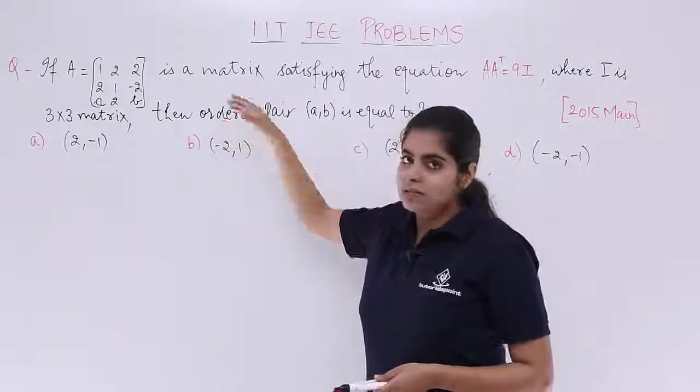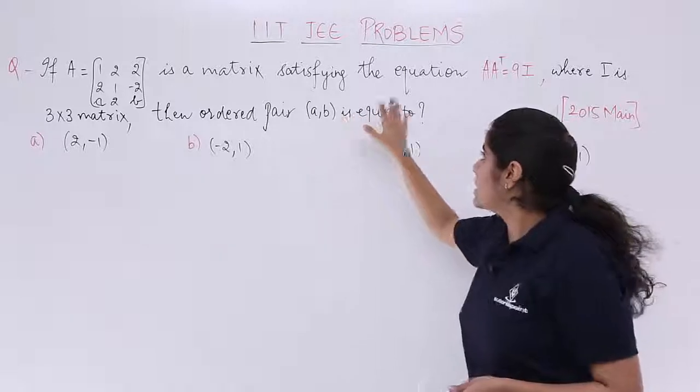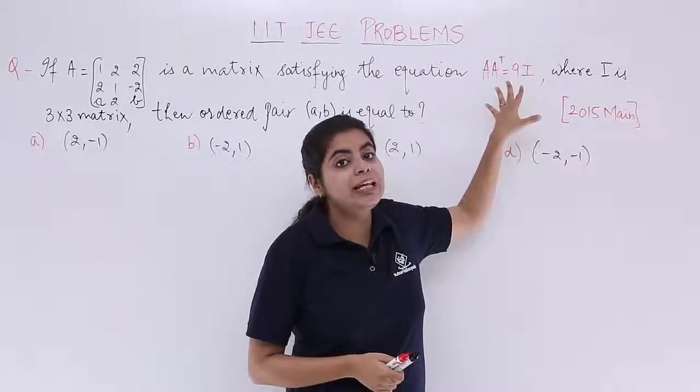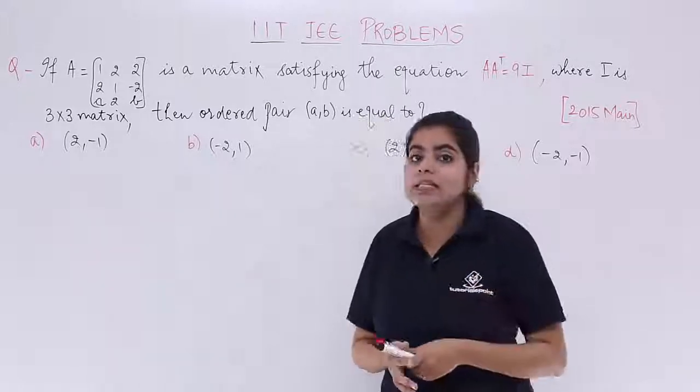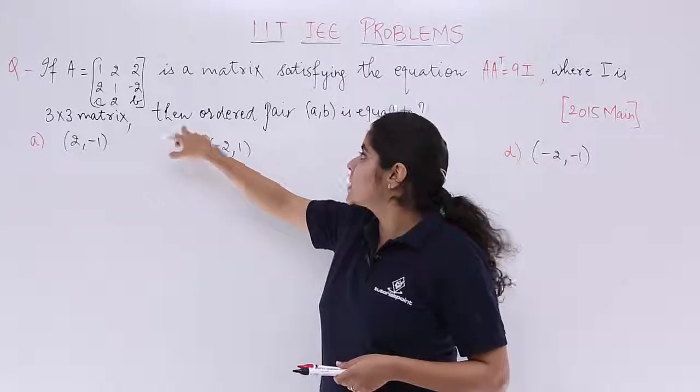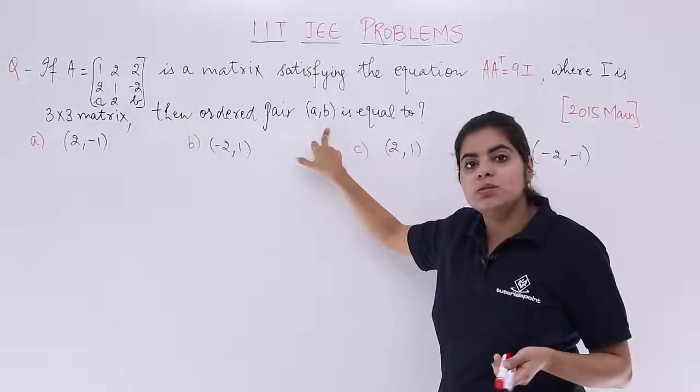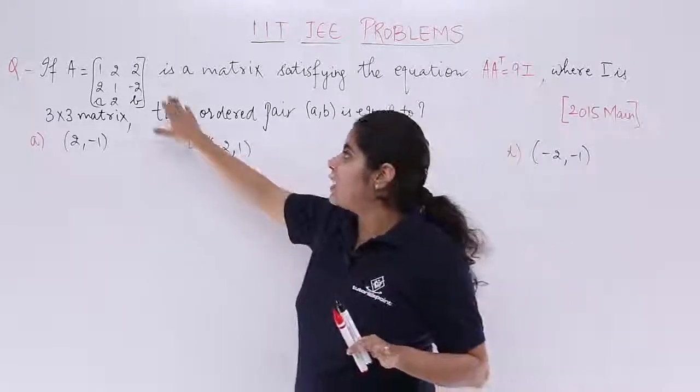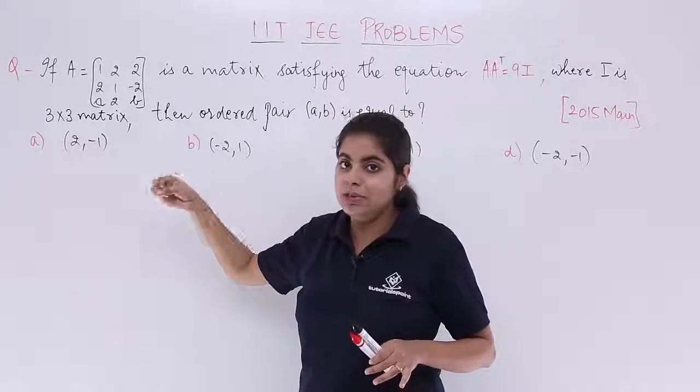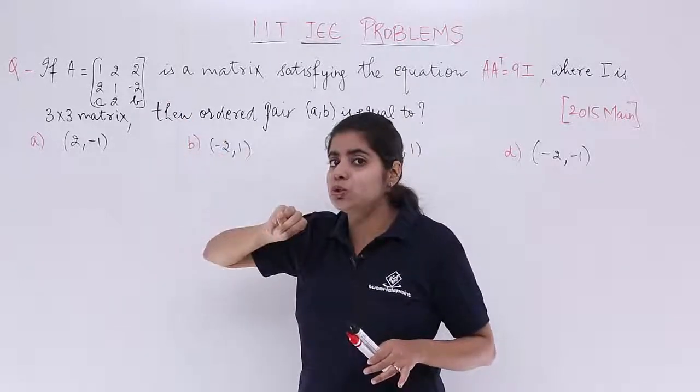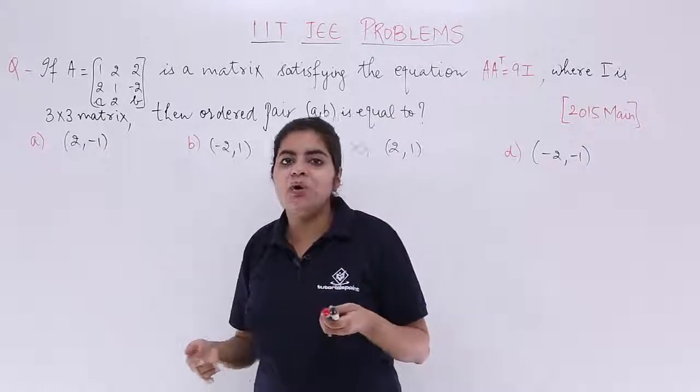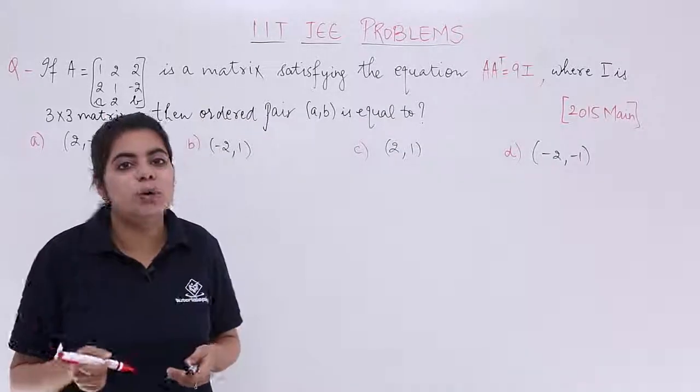If A is a matrix satisfying the equation A into A transpose is equal to 9I, where I is the identity matrix and it is a 3 by 3 identity matrix, then the ordered pair AB is what? So you have a matrix A. There are all numbers as elements, but only two alphabets are used, A and B, and you have to calculate the value of A and B only in the form of an ordered pair.